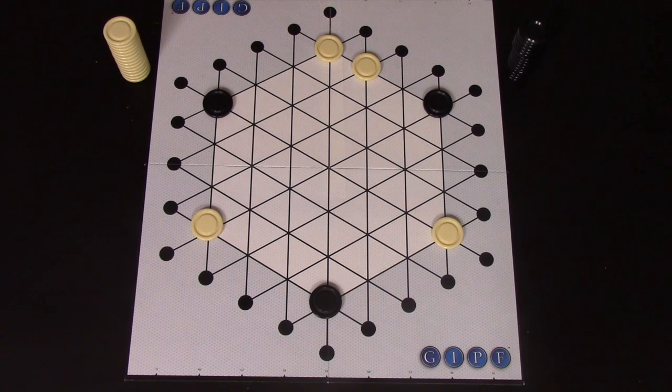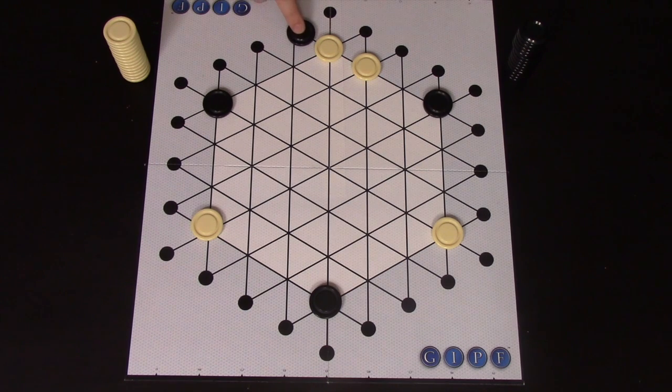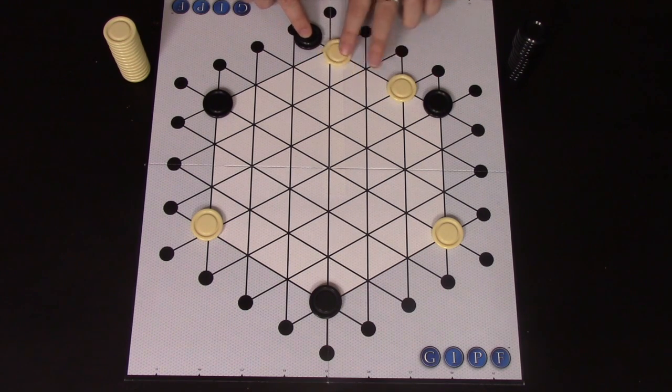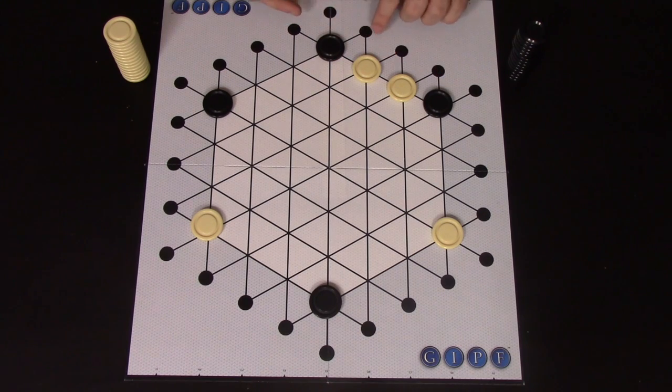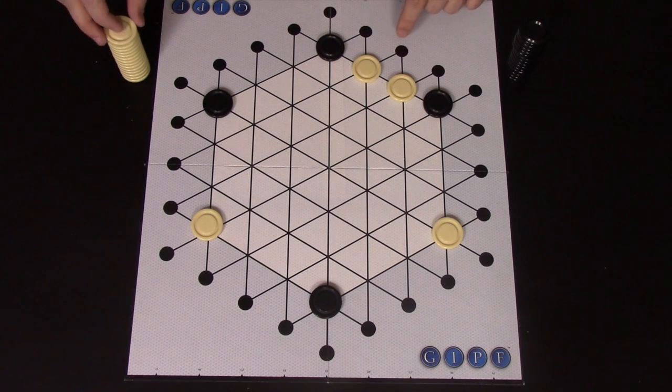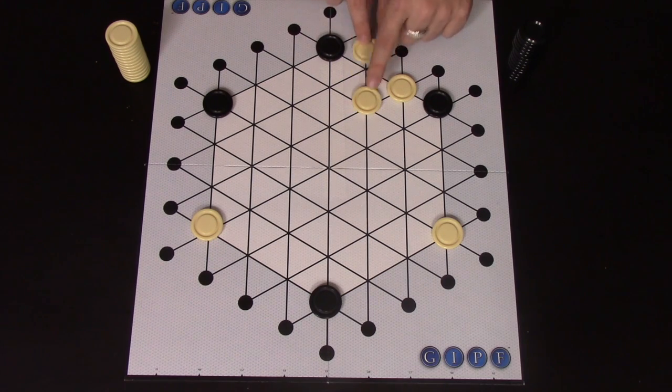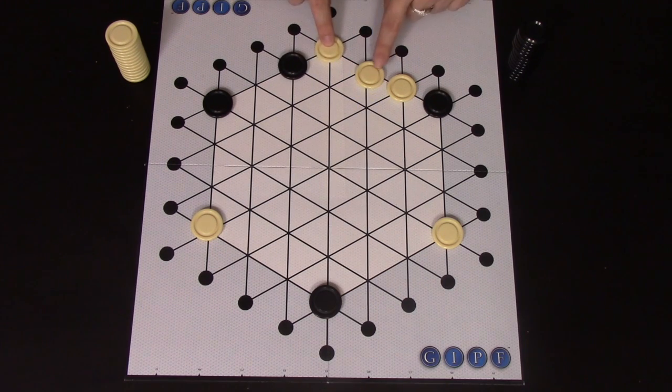On black's turn, they could do the same thing. They don't have to just move black pieces, but black could add a piece to the board in the same way. You could add this piece to the board and move these down one. Now, because this row is completely full, you can no longer push the row that way. But on white's next turn, they could place one here and either push that white piece that way or that black piece that way.